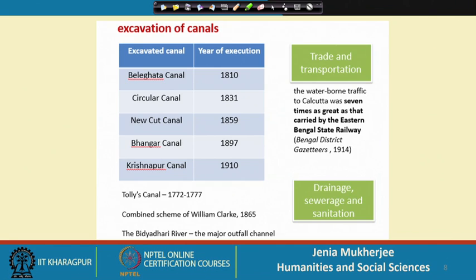The major rivers were the Bhagyati Hooghly and the Vidyadhari, along with numerous natural canals and creeks in between. They came up with a system known as the eastern canal system. They used this natural space and natural water courses, manipulated through their own technological expertise and hydraulic knowledge, and came up with a particular network connected to the river Hooghly on the west and the river Vidyadhari on the east, finally connected also to the salt water marshes.